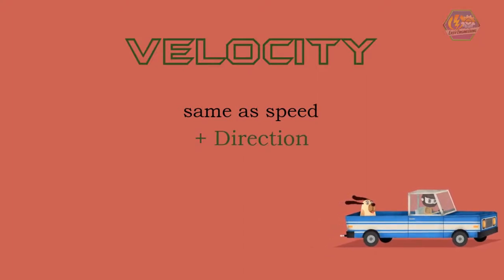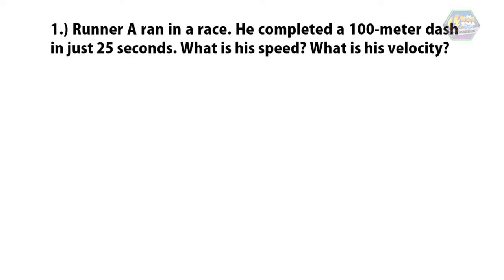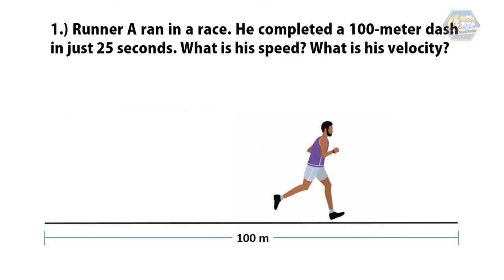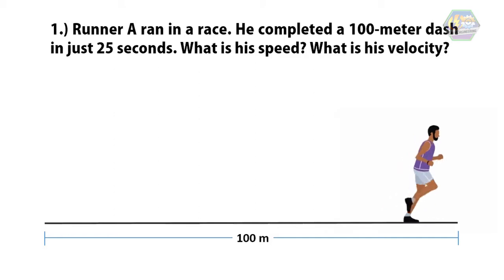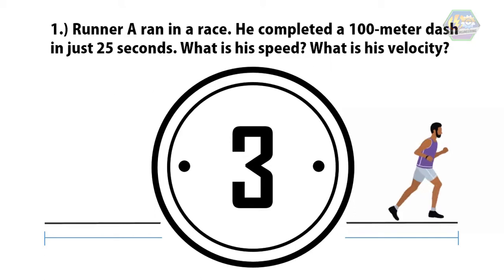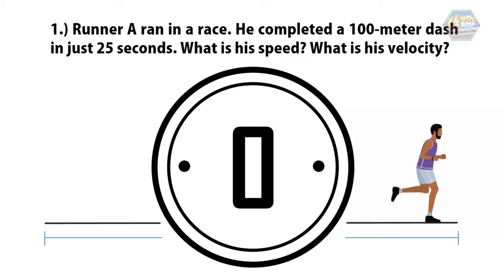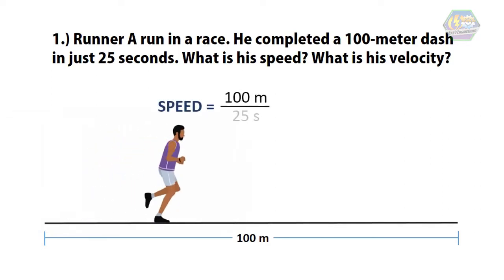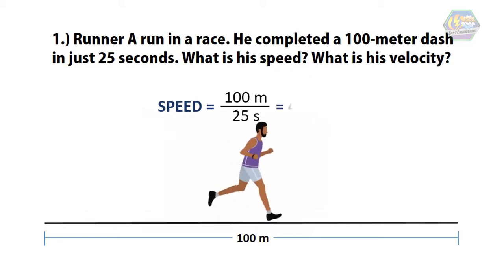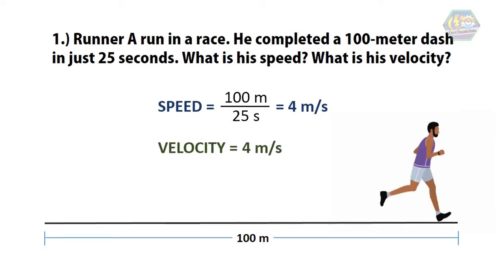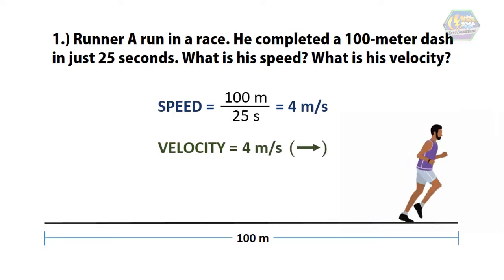Let's have an example. Runner A ran in a race and completed a 100-meter dash in just 25 seconds. What is his speed and velocity? His speed is 100 meters divided by 25 seconds, which equals 4 meters per second. His velocity is the same — 4 meters per second going to the right.